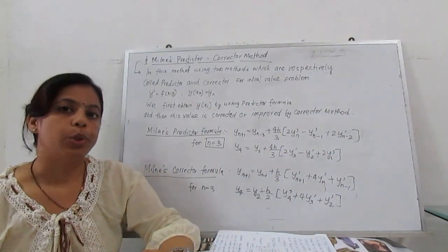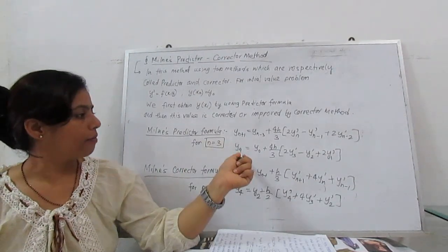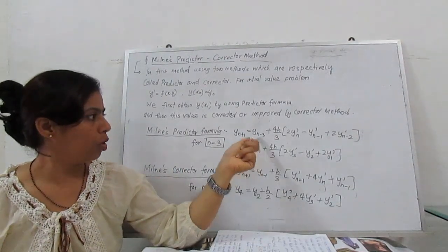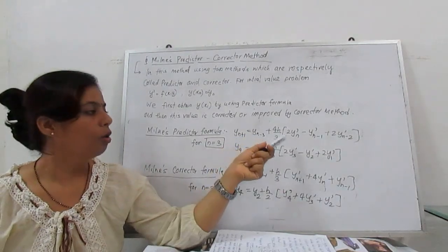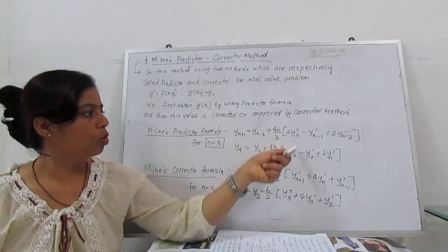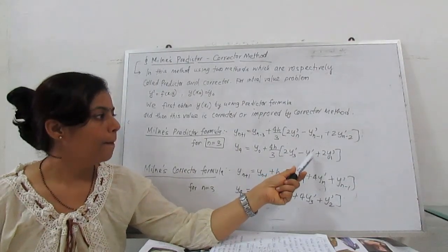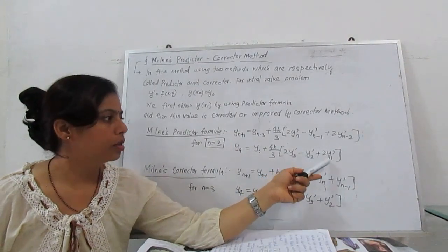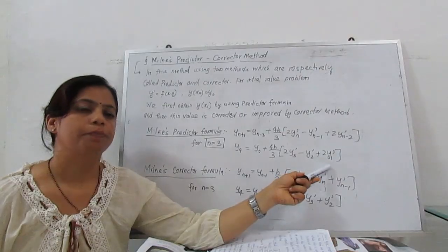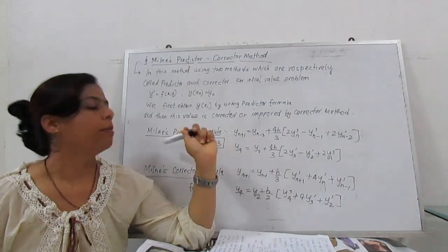If we substitute n = 3, then y₄ = y₀ + (4h/3)[2y'₃ - y'₂ + 2y'₁]. So this is our predictor formula.